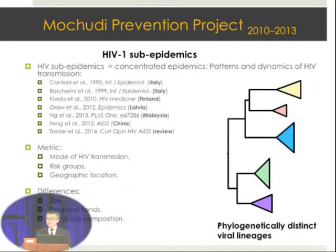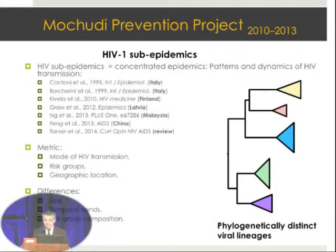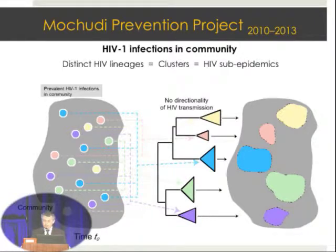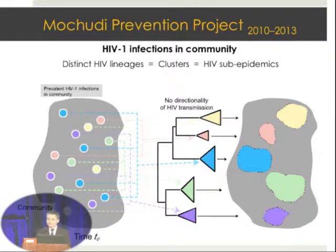What I'm going to talk about today is a slightly different approach. We use the same terminology—sub-epidemics—but we use phylogeny of viral sequences collected in communities to determine the sub-epidemics. We associate distinct viral lineages—phylogenetically distinct lineages defined as clusters from the community—that represent trackable sub-epidemics. When we identify these viral lineages, we're not talking about directionality of viral transmission, because that is not really important. What is most important is where new infections will fall.